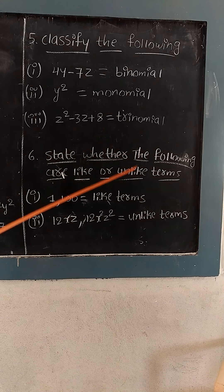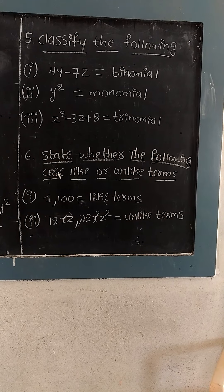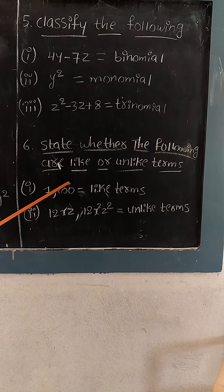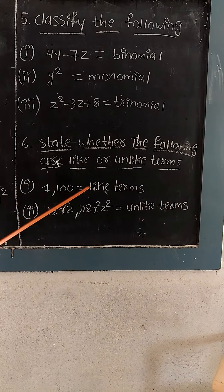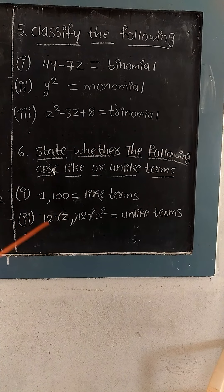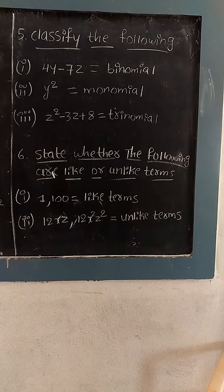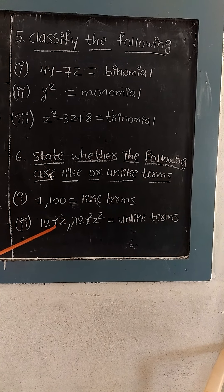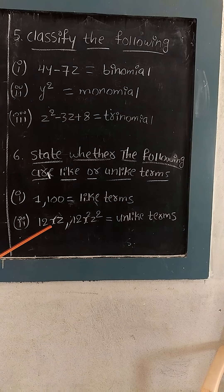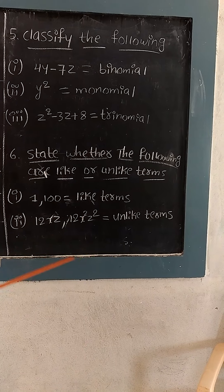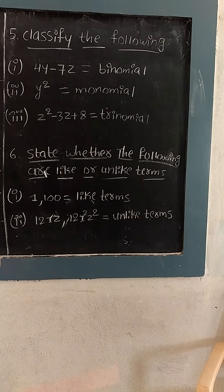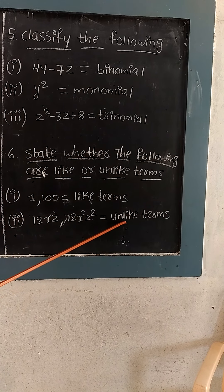Sixth question: state whether the following are like or unlike terms. For like terms, the algebraic factors must be the same. First: 1 and 100. These two are numerical numbers, so we call them like terms. Second: 12xz and 12x squared z squared. To determine like terms we consider the algebraic variables and their powers. Here we have xz versus x squared z squared — both are not the same, so we call them unlike terms.